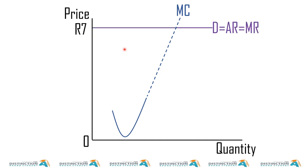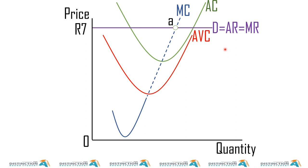Don't be surprised by where the demand curve is positioned — it's way above. I just want to explain concepts as I work down. At this point, we can only tell the profit-maximizing point. If the price is seven rand, this would be our demand curve, because demand equals price equals AR equals MR. Point A would be the profit-maximizing point. Is this firm making a profit or a loss? We don't know yet because we don't have the average cost curve. So now I'm introducing the average cost curve and the average variable cost curve.